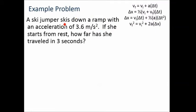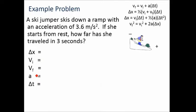Here's an example: a ski jumper skiing down a ramp with an acceleration of 3.6 m/s² starting from rest. How far has she traveled in three seconds? First, draw a picture and label the plus and minus directions. Then write down the five variables every single time and fill in what you know.